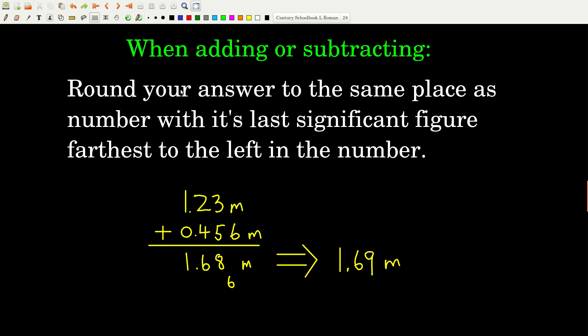What does that mean? Well, let's say we're adding these two numbers right here, 1.23 meters and 0.456 meters. Well, the last significant figure in 1.23 is the three. That's in the hundredths place or two places to the right of the decimal. The last significant figure in 0.456 is the six. That's three to the right of the decimal or the thousandths place. The six is farther to the right than the three is. The three is farther to the left. You got that? So that means that we're going to round our answer to the same place as the three is in, that is, two to the right of the decimal. So when we add these numbers together,